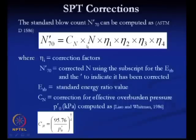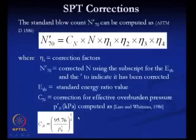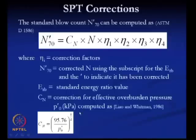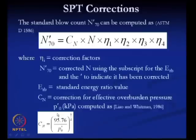The correction Cn is for effective overburden pressure, calculated using the expression with P0-bar as the effective overburden pressure. This correction is very important for granular soils, where effective overburden pressure plays a significant role in determining the SPT value. Near the ground surface, the effective overburden pressure is less, and in deeper strata it is very high — so a correction is required for different soil layers.